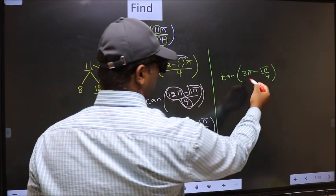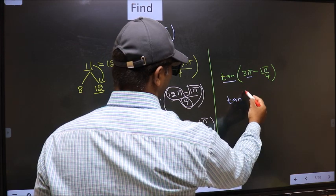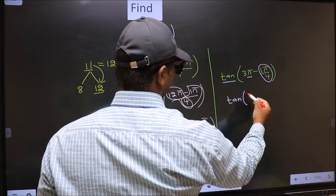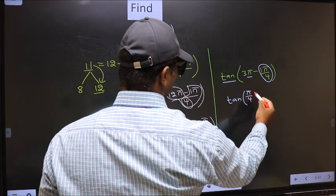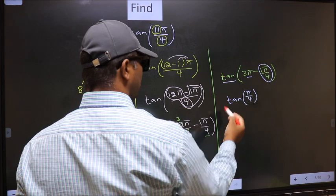Next, here we have π, so tan is not going to change. It will remain tan. And inside we get this angle, π by 4. Now the question is, will we get here plus or minus?